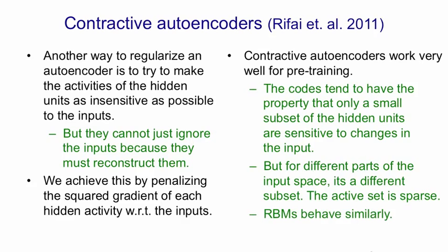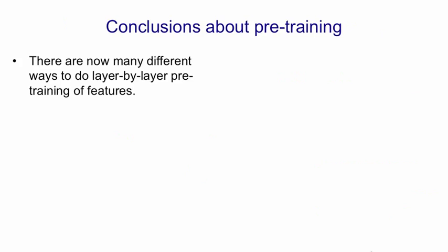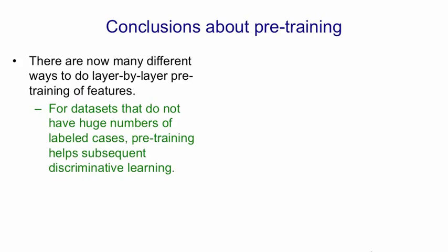RBMs actually have a very similar behaviour. After they've been trained, many of the hidden units will be saturated, and the working set of unsaturated ones will be different for different training cases. I want to finish by summarising my current view of pre-training. There are now many different ways to do layer-by-layer pre-training that discovers good features. When our data set does not have a huge number of labels, this way of discovering features before you ever use the labels is very helpful for the subsequent discriminative fine-tuning. It discovers the features without using the information in the labels, and then the information in the labels is used for fine-tuning the decision boundaries between classes.